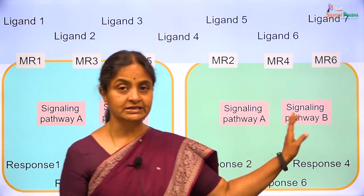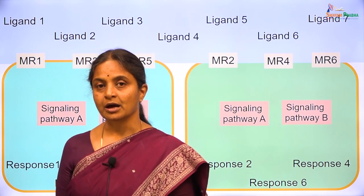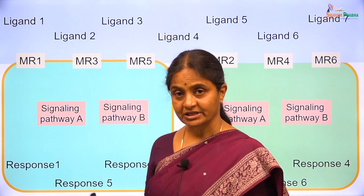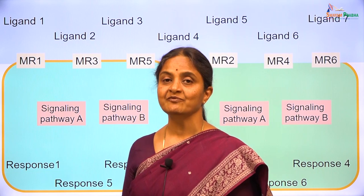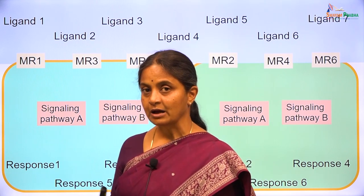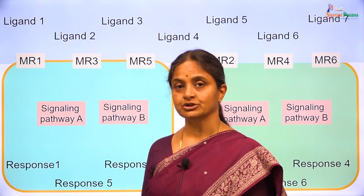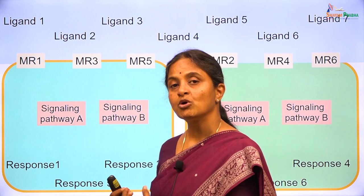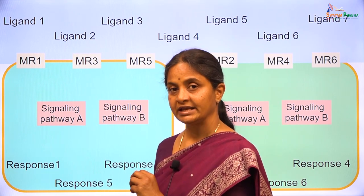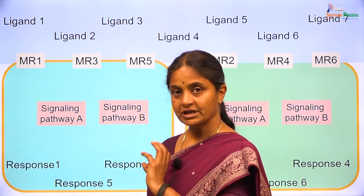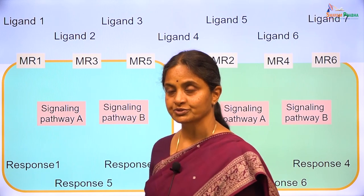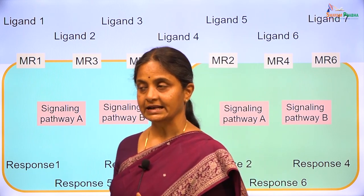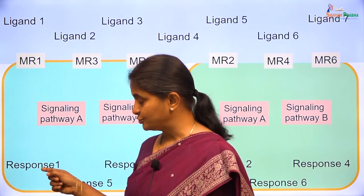We will consider individual signaling pathways in the forthcoming lectures, but now we will look at some generalizations. The signaling pathways very often end up activating an enzyme or a protein within a cell, and that is how the response is produced. For example, when insulin acts on a liver cell, the liver cell will take up glucose and glucokinase in the liver cell will be activated. Glucokinase adds a phosphate group to glucose — kinases are phosphorylases which add on phosphate groups.